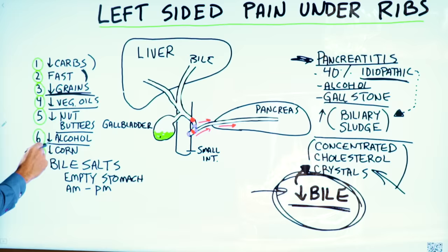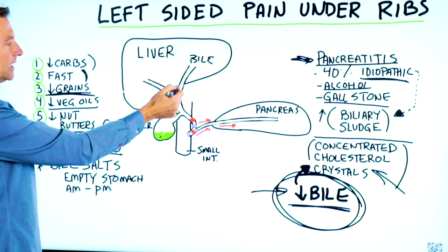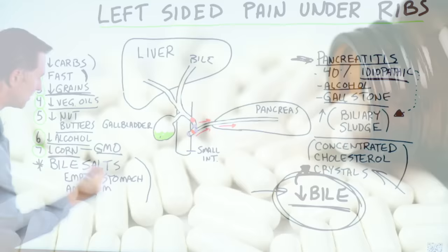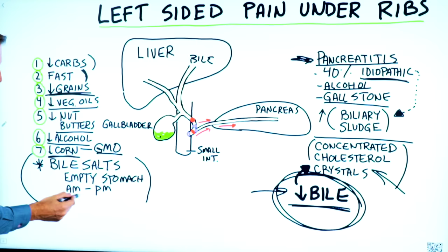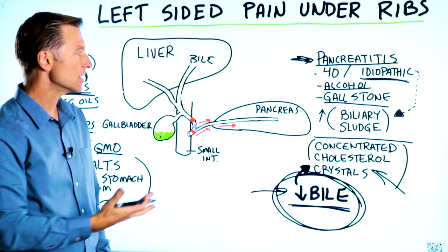Number seven: corn. Most corn is GMO, which means it has glyphosate, which is very irritating to the inner lining of your bile ducts right through in here. Also, it's a carbohydrate. And of course, taking purified bile salts would be very, very important. Take one in the morning on an empty stomach and take one in the evening on an empty stomach, and that can gradually help keep this flow opened, keep it drained, and reduce the inflammation.